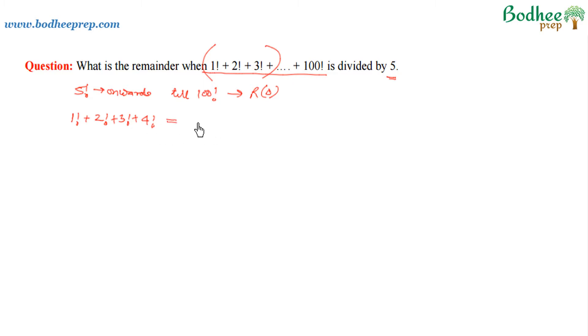These are easy to calculate: 1 factorial is 1, 2 factorial is 2, 3 factorial is 6, and 4 factorial is 24. So overall the value is 33. Now we need to divide 33 to get the required remainder.